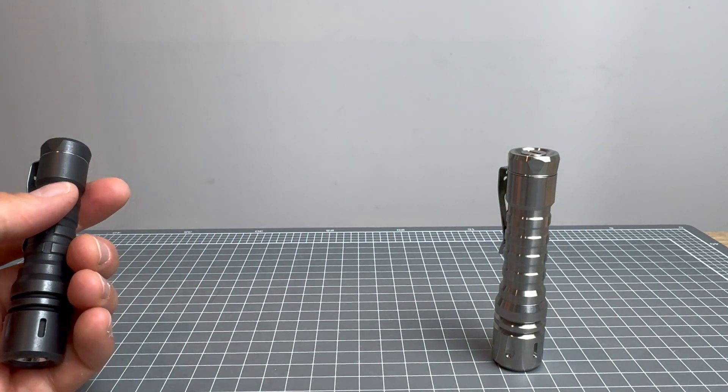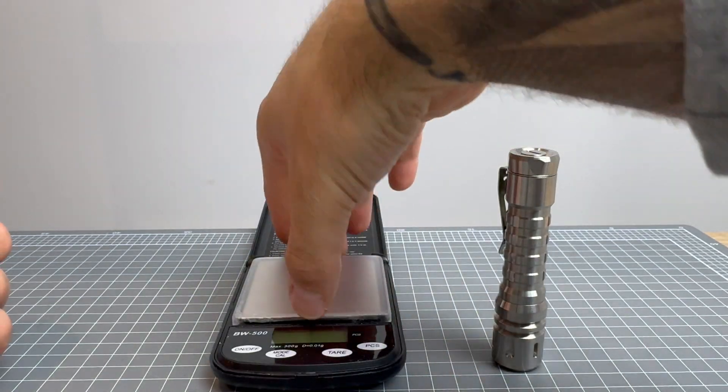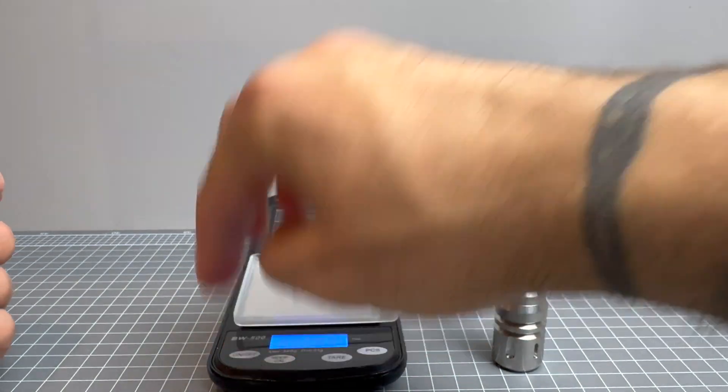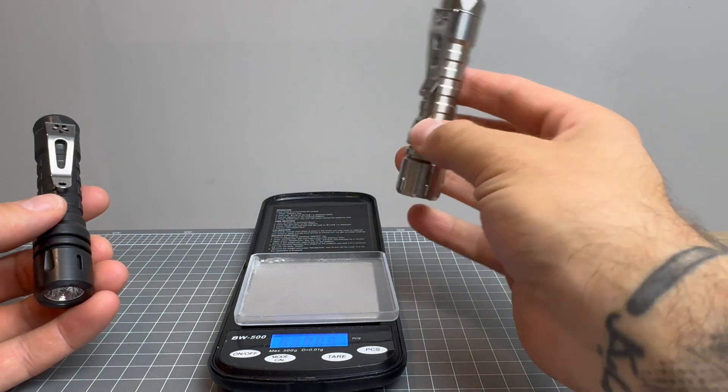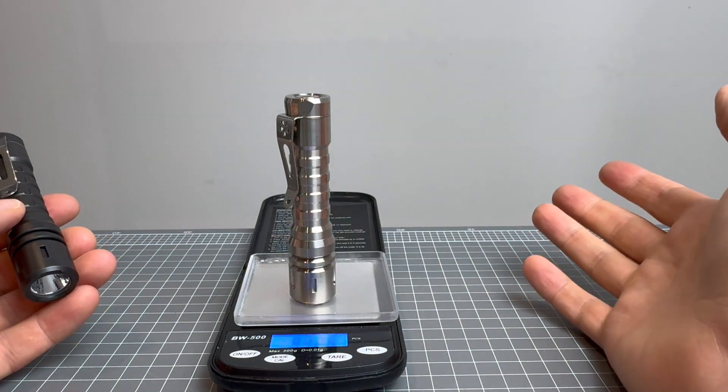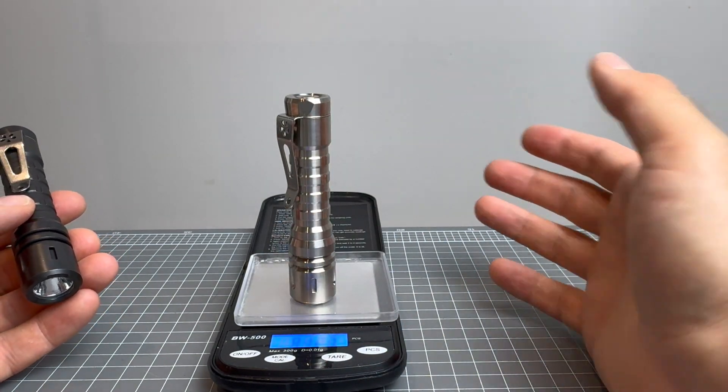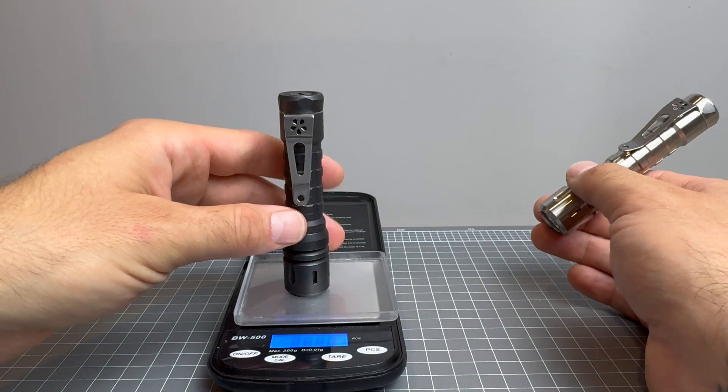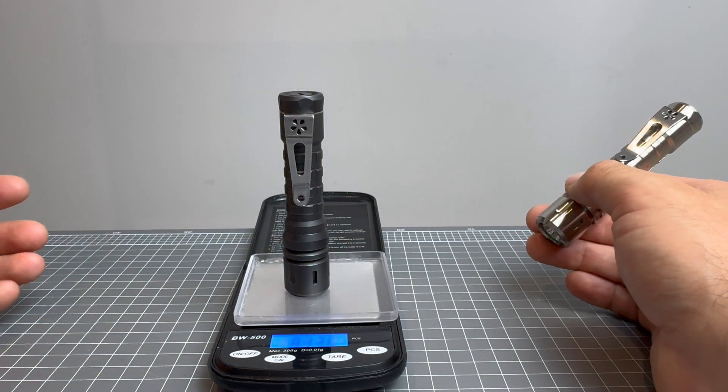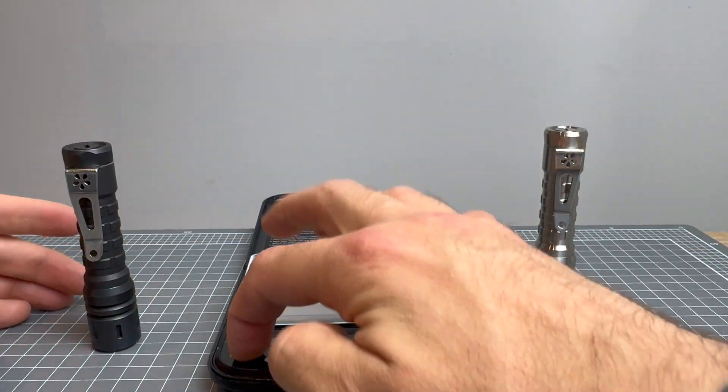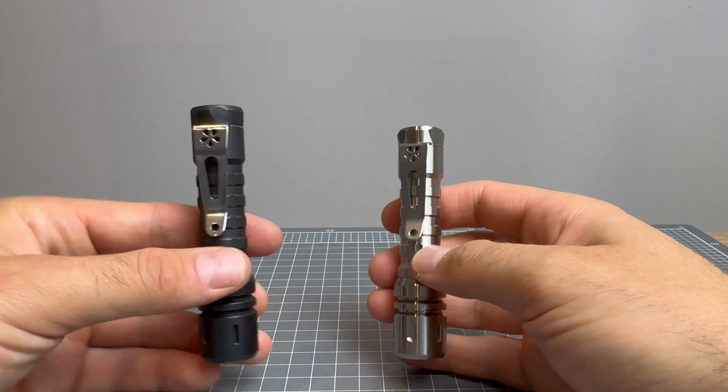Now, I actually am very curious to see the weight difference. So both of these batteries are fully charged, by the way. So we have raw titanium at 81.27 grams, and we have black oil at 81.35 grams. Okay, so they're basically weigh the same. So the black oil makes no difference.